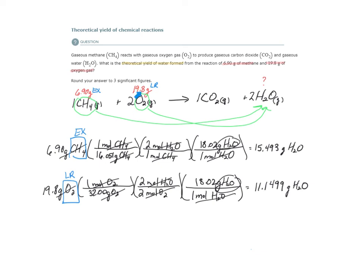The oxygen is completely consumed. Once the oxygen is gone, the reaction stops. When the reaction stops, there's no more oxygen, there will be some methane left over. But we will have 11.1 grams of water formed. From this and this, we can make 11.1 grams of water. And we call this our theoretical yield.